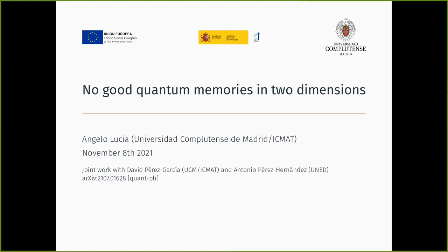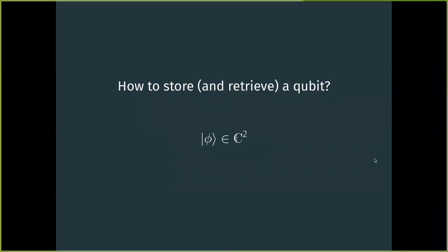Today I'm going to talk about quantum memories in two dimensions. I promise I will try to explain what they are, why they're useful, and what problem we have, even to people who have never seen this topic before. The idea of a quantum memory is that we have a qubit or a larger state, which is a vector in a two-dimensional Hilbert space, and we want to find a way to store it safely from noise and other issues, to retrieve it at a later time.